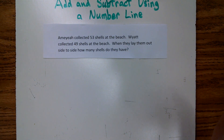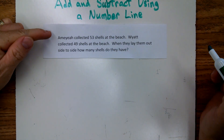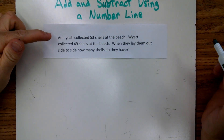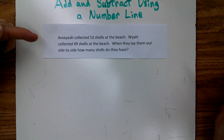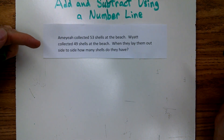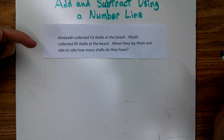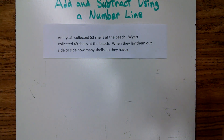Let's start out by reading a word problem. Amaya collected 53 shells at the beach. Wyatt collected 49 shells at the beach. When they lay them out side by side, how many shells do they have?